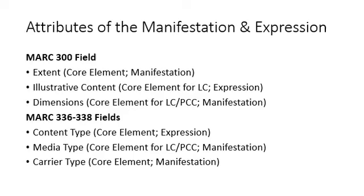But the newness of the MARC 336, 337, and 338 fields means you may not see them. OCLC has run some automated processes to add these fields to every bibliographic description in WorldCat, but local catalogs at most libraries have not gone through the same kind of processes, so the data is not there.